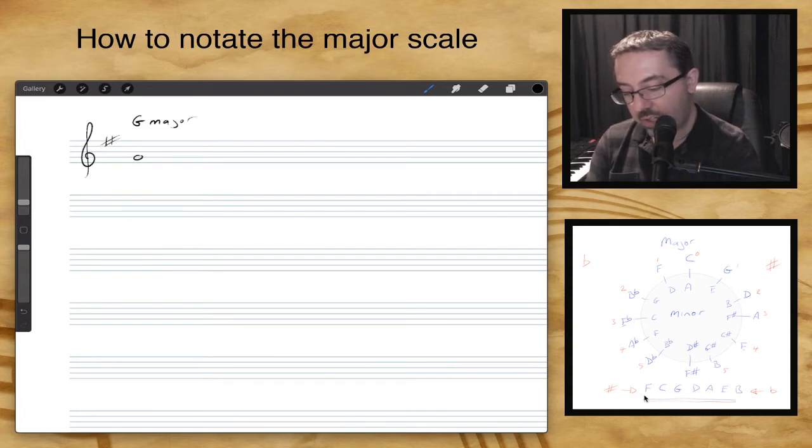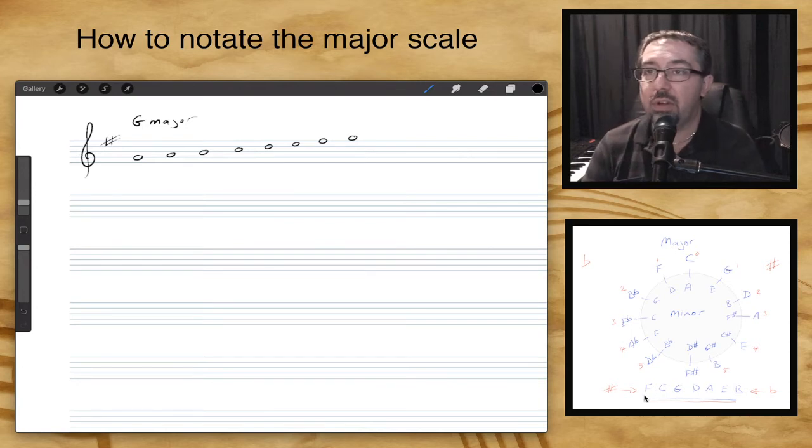So we've got G, followed by A, B, C, D, E, F, G. And our F sharp has been taken care of by that key signature that we've already put in there. So there we have it. We've got G major with our F sharp in the key signature.